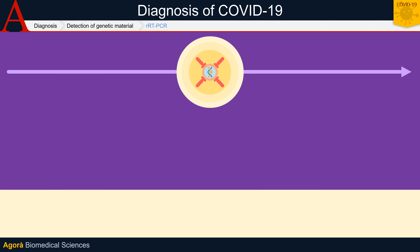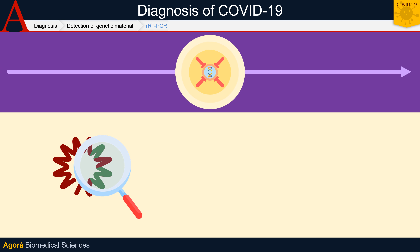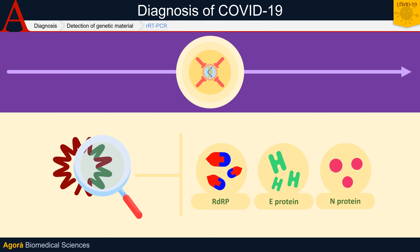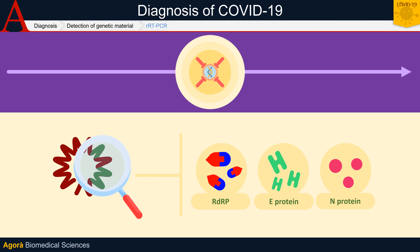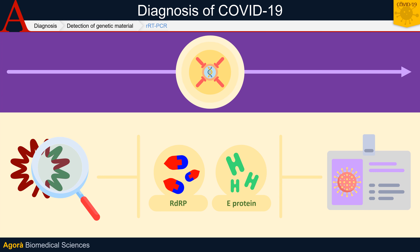In particular, three genes specific to SARS-CoV-2 that can be searched for with RRT-PCR have been identified. These three genes are: the gene for RDRP (RNA-dependent RNA polymerase), the gene for E-protein (envelope), and the gene for N-protein (nucleocapsid). However, the data show that the first two genes, RDRP and E-protein, are more detectable in patients with suspected COVID-19 than the third one.